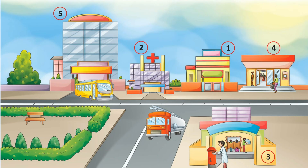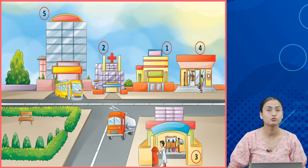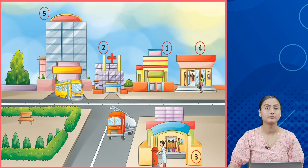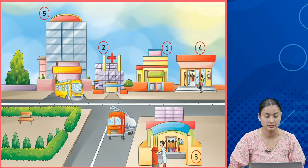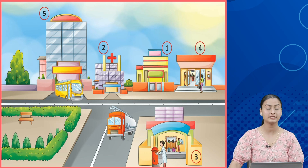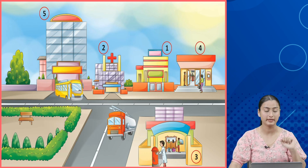Post office है students आपका number 3 पे। उसके बाद आता है आपका school — school है आपका number 5 पे। उसके बाद आता है fire station और fire station है आपका number 1 पे।